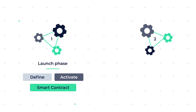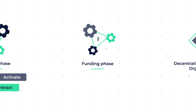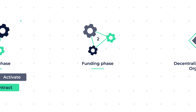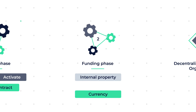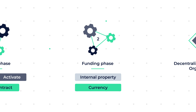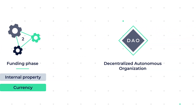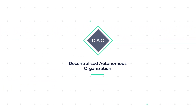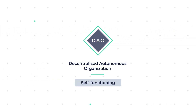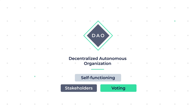After the launch phase, the DAO moves onto the funding phase because it needs an internal property that uses currency to carry out smart contract functions. When both phases are complete, a DAO can function by itself, and its functions are carried out by its stakeholders via way of voting.